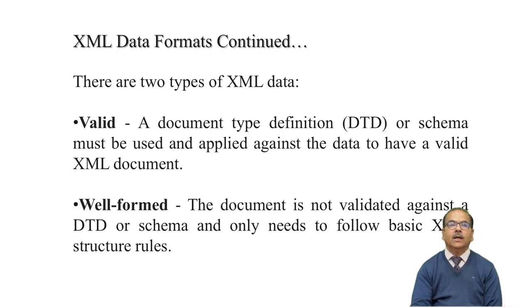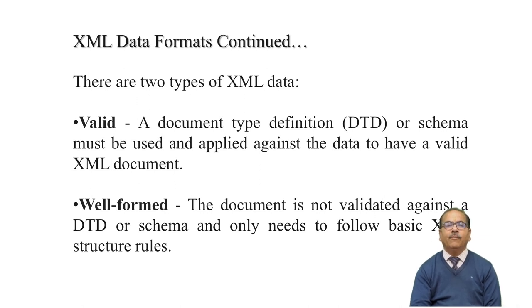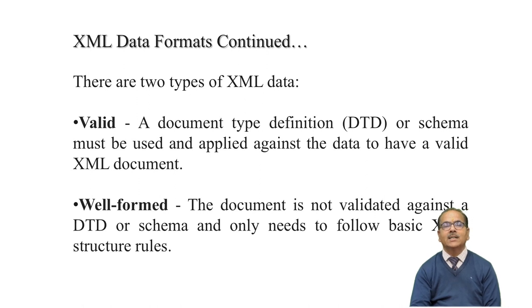There are two types of XML data. One is valid, the other is well-formed. Valid means if an XML document is valid, it conforms to the rules of the Document Type Definition. Well-formed means a document which contains proper syntax and adheres to specification 1.0 as laid out by the W3 Consortium.